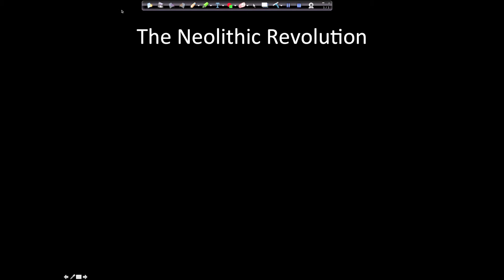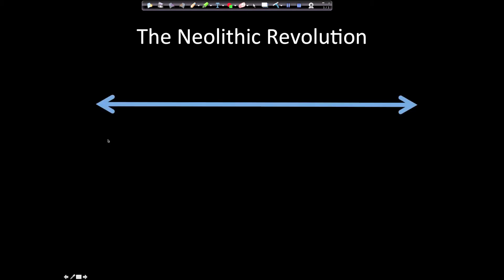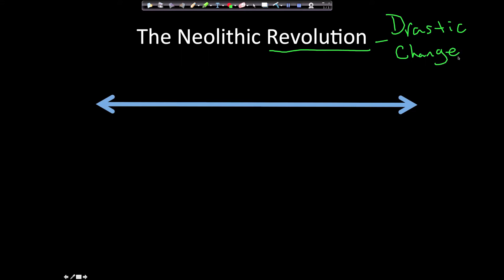Today we're going to talk about the Neolithic Revolution. To begin, we need to understand what the word revolution means — revolution means a drastic change. For the Neolithic Revolution to make any sense, we need to first talk about what it was like before the revolution. Before the Neolithic Revolution was a period called the Paleolithic Era.